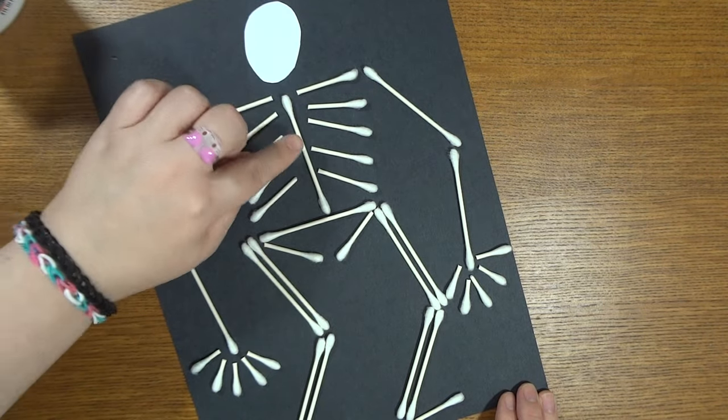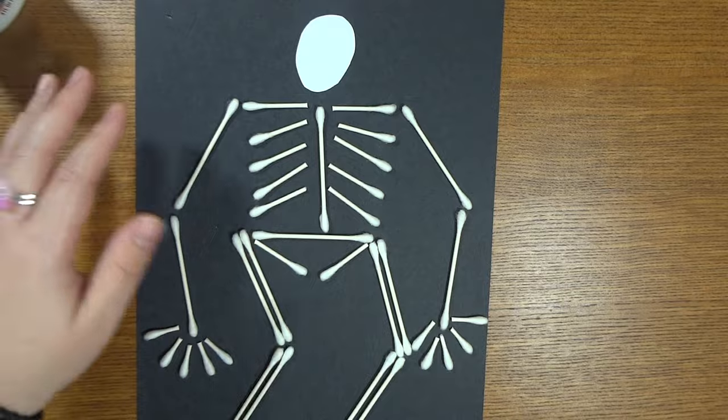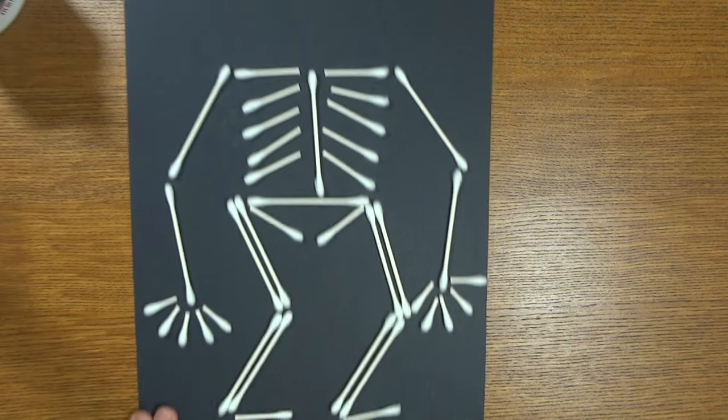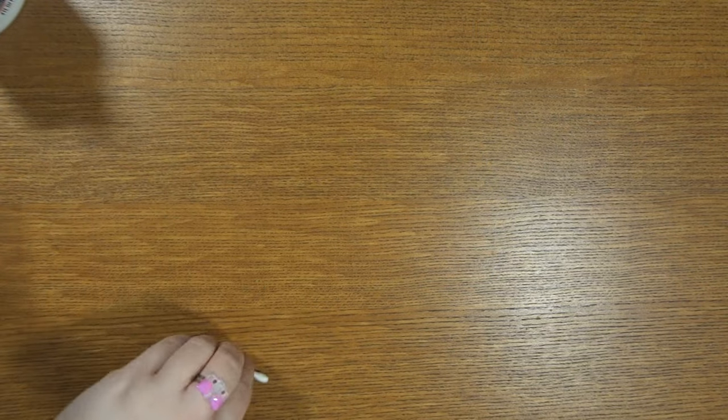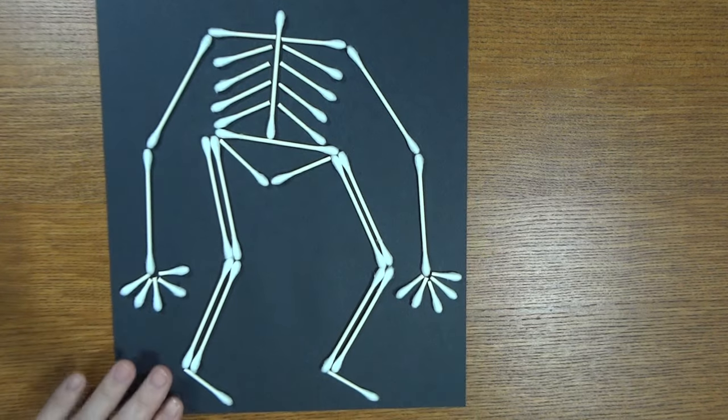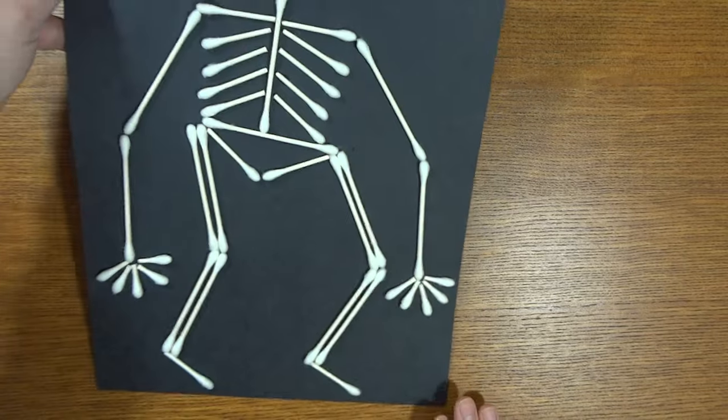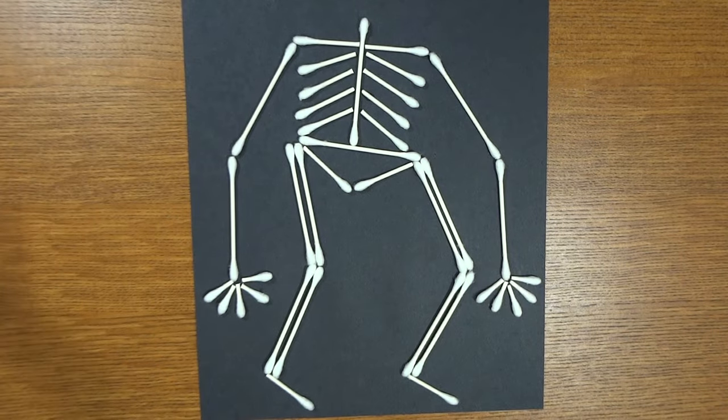...your paper, just like that. So you're going to glue all of your pieces onto your paper, and once you've completed that, you'll have a piece that looks like this. All those skeleton cotton swab pieces are glued down. Then you're going to want to go ahead and design your skeleton's head. I like to just do...